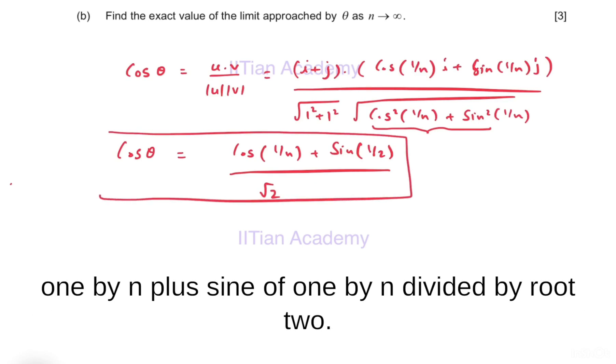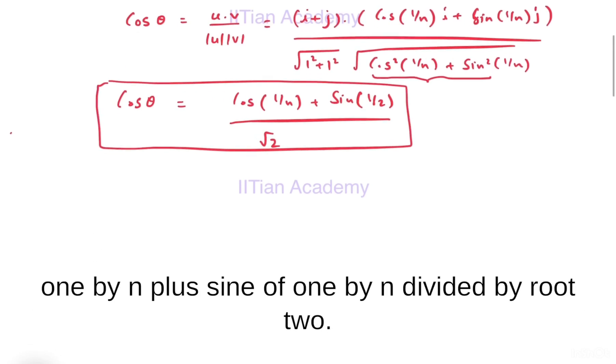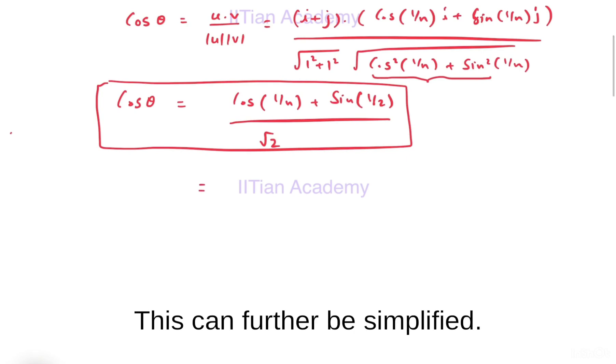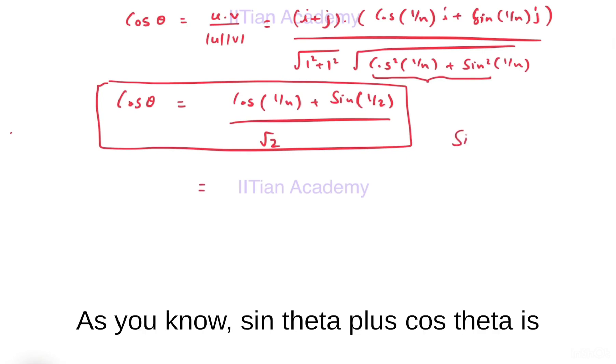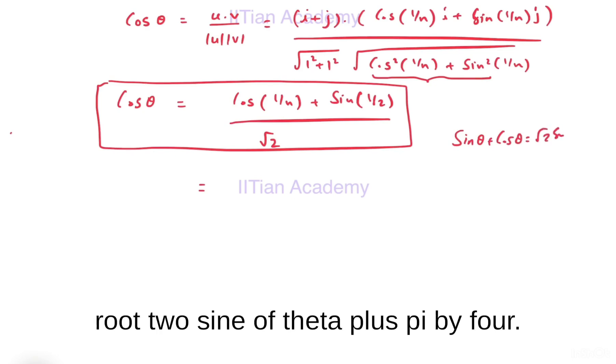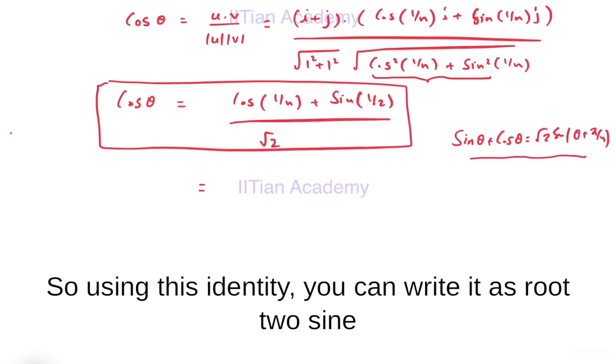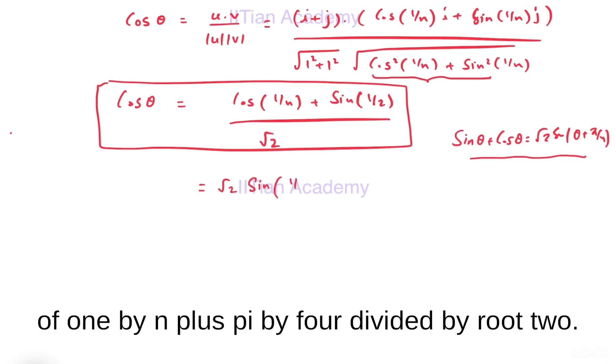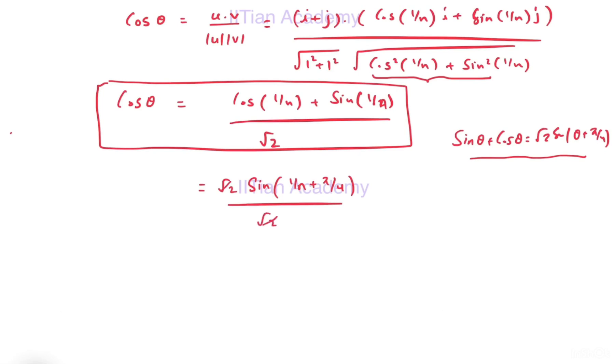This can further be simplified. You know sin θ + cos θ is √2 sin(θ + π/4). So using this identity, you can write it as √2 sin(1/n + π/4) divided by √2.